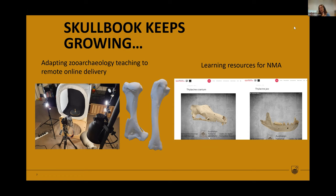Another outcome we got from Scalbook was creating some learning resources for the National Museum of Australia. If you go to their website and the digital classroom resources, you will see a cranium and a mandible — a jaw — from a thylacine, a Tasmanian tiger, with some annotations that you can play with on the models.